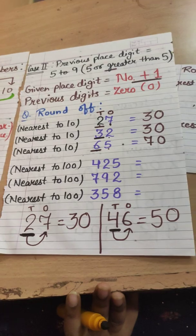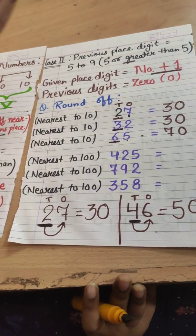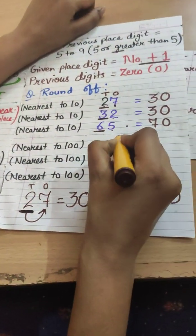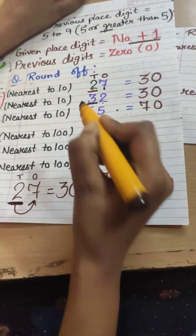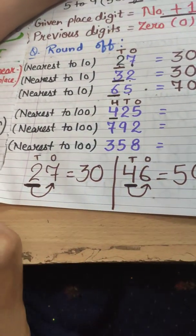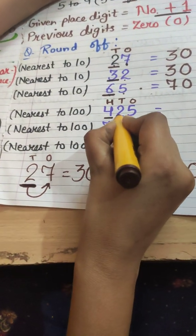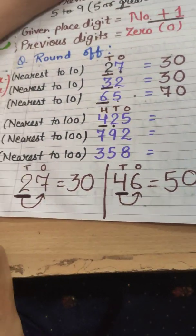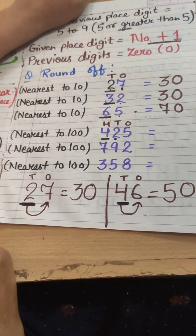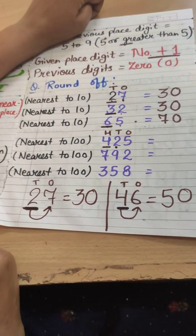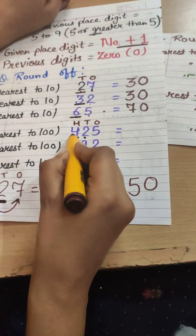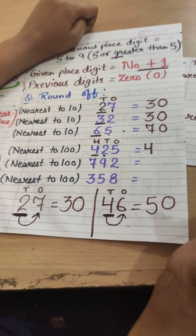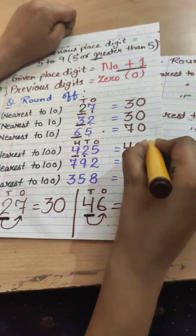Now let's round off to the hundreds place. Take 425: the hundreds place digit is 4, and its previous digit is 2. Since 2 is smaller than 5, this 4 will remain the same and the rest become 0, giving us 400.